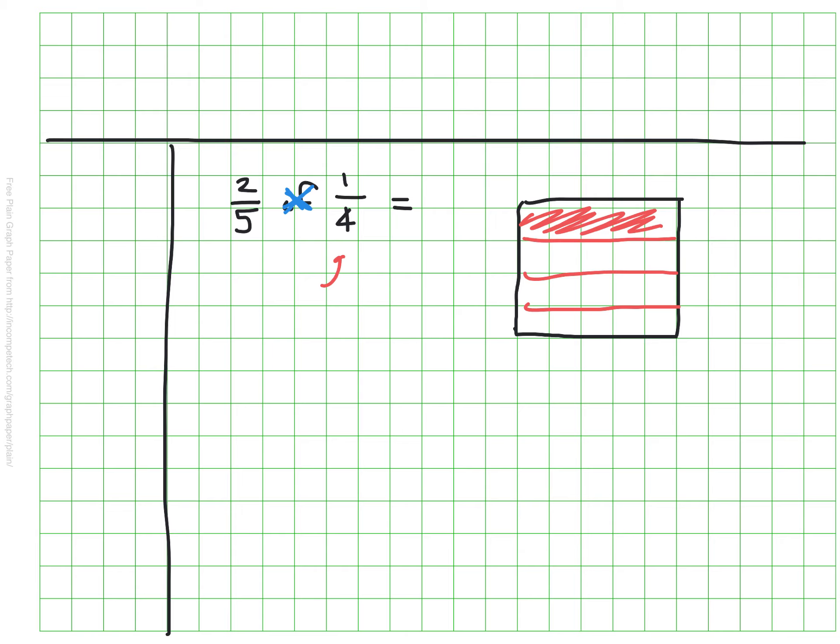Then I want two-fifths of that, so I'm going to break this into fifths in the other direction. And my numerator here is a two, so I'm going to go ahead and shade in two of those.